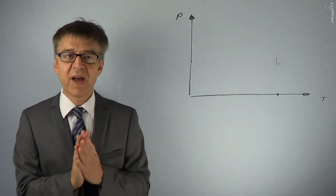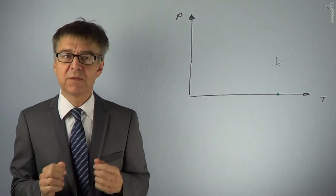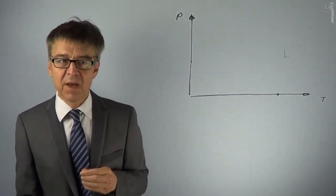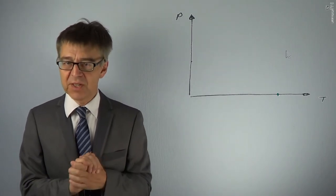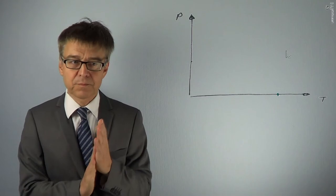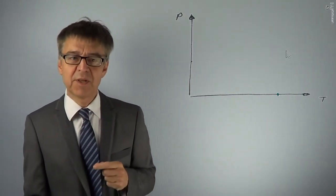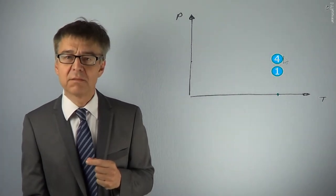To simplify the three-dimensional PVT diagram, often two-dimensional projections are used. Either projections on the PV plane, or projections on the PT plane. The process from state 1 to state 4 in the PT phase diagram is a simple vertical line.